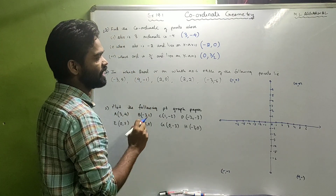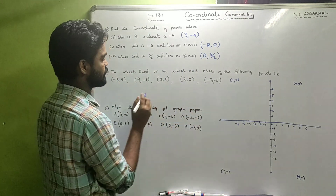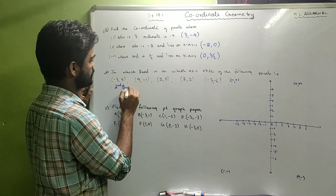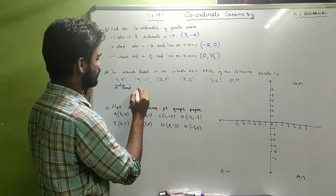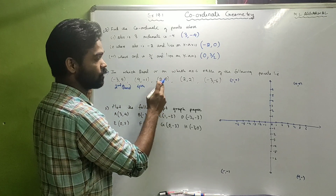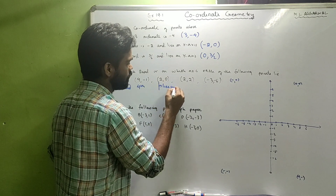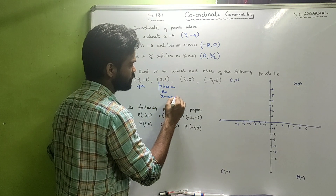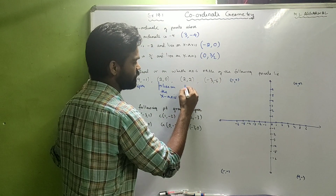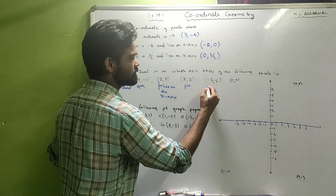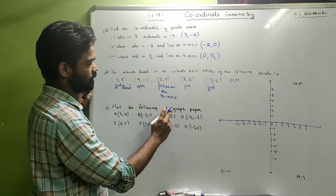Question 2: In which quadrant or on which axis does each point lie? (−3, 5) lies in the second quadrant. (4, −1) - positive and negative - lies in the fourth quadrant. (2, 0) - any point of the form (x, 0) lies on the x-axis. Both coordinates positive means the first quadrant; both negative means the third quadrant.